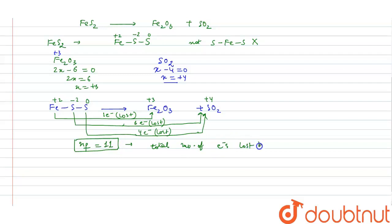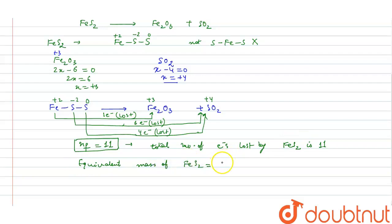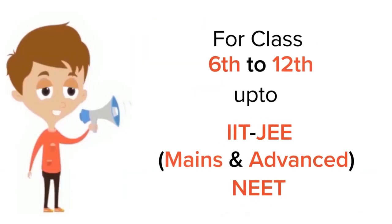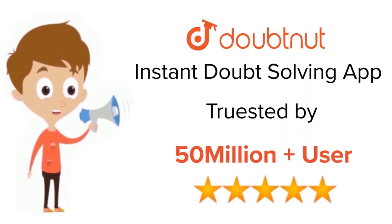Since the total number of electrons lost by FeS₂ is eleven, we can now find the equivalent mass. The equivalent mass of FeS₂ equals its molecular mass M divided by the valency factor eleven. So the equivalent mass of FeS₂ is M/11. I hope you understood the solution. Thank you.